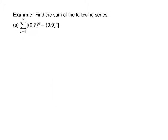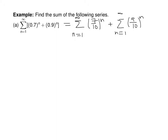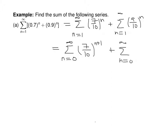Let's use that to find the sum of the following series. We'll split it into the sum from n equals 1 to infinity of 0.7 to the n, plus the sum from n equals 1 to infinity of 0.9 to the n. Both are geometric series with r between 0 and 1, but they begin at n equals 1, so let's change the indices to start at 0. That gives 7 tenths to the n plus 1 and 9 tenths to the n plus 1.